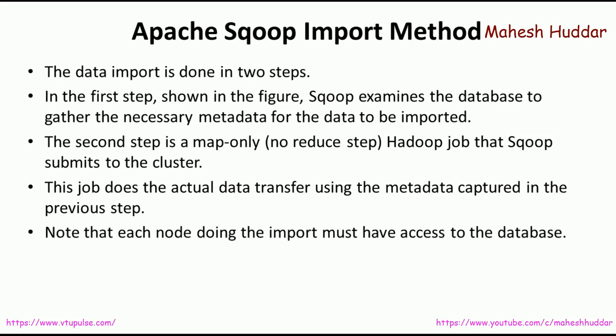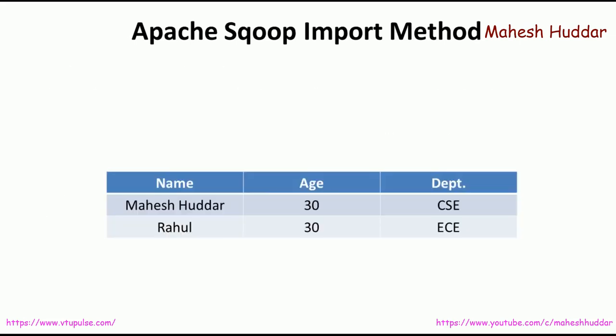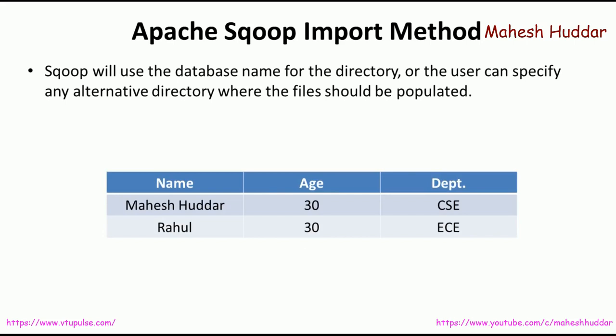One thing to note is that whenever we want to import data from a database (RDBMS) to a Hadoop cluster, we need to have access to that particular database. The imported data is saved into an HDFS directory. Sqoop will use the database name for the directory — whenever data from a database is imported into HDFS, the name of the directory will be the same as the name of the database, or the user can specify an alternate directory name.